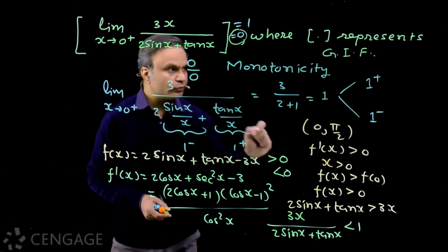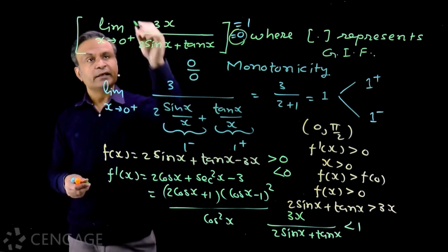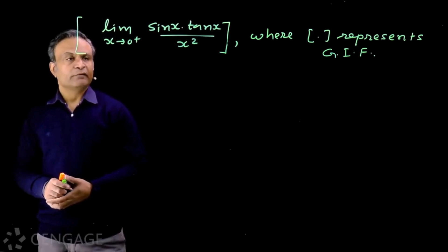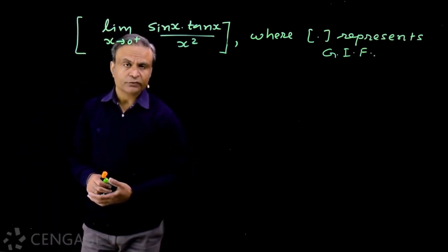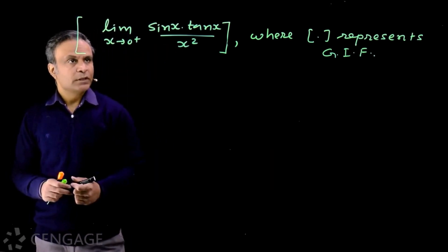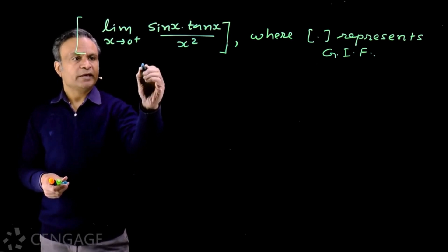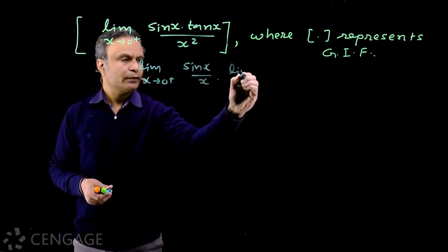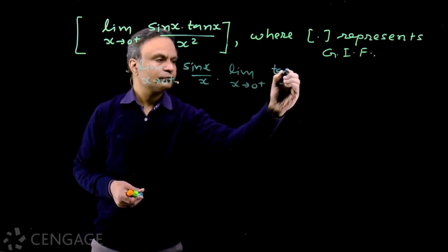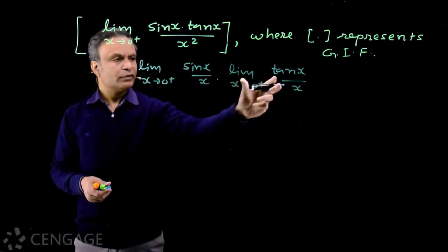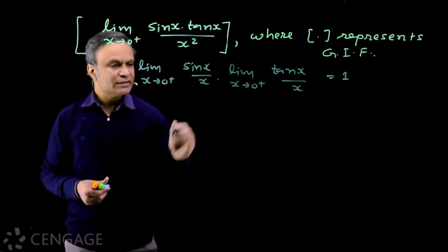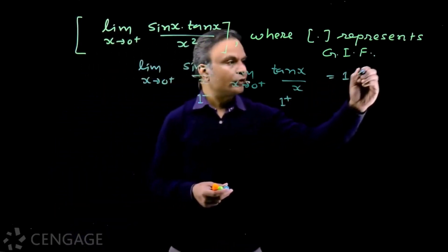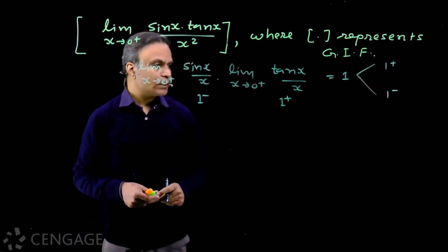So here monotonicity helps us check whether the limiting value is 1+ or 1−. Let's take one more question. We have limit x tends to 0+ of sinx·tanx/x². We have to find the greatest integer less than or equal to this limit. This limit appears simple: sinx/x times tanx/x — each factor tends to 1. But the problem is sinx/x is 1− and tanx/x is 1+, so the product may be 1+ or 1−.